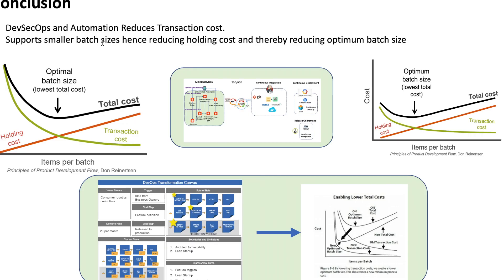In conclusion, DevSecOps and automation reduce transaction cost, and the more you invest in them, the optimal batch size intersection point shifts further to the left. You can identify and march toward that using the SAFe DevOps Transformation Canvas, which helps you identify the key areas to focus on first. That way you can lower your transaction cost and shift your optimal batch size to the left. This has been a quick explanation of how U-curve optimization works, with a practical example of testing and DevOps. Thank you for listening.